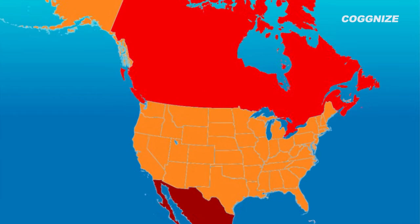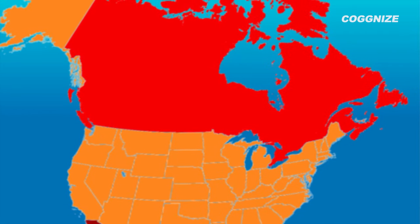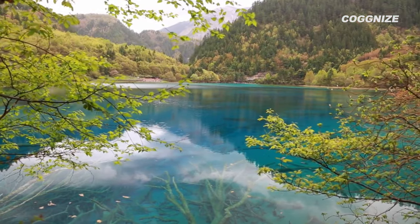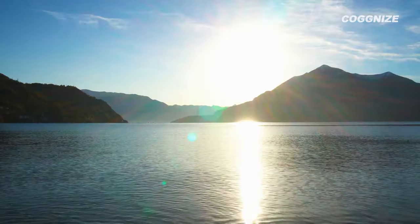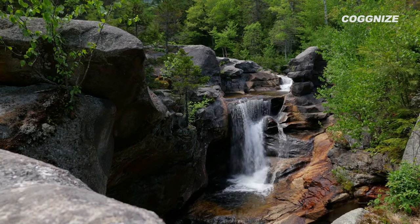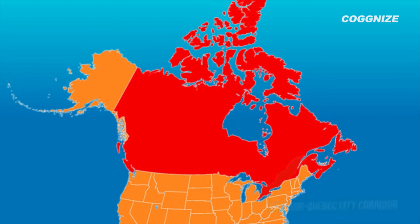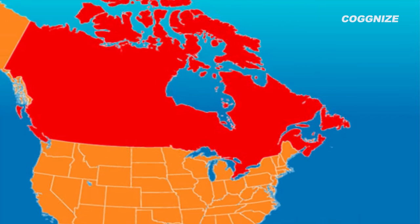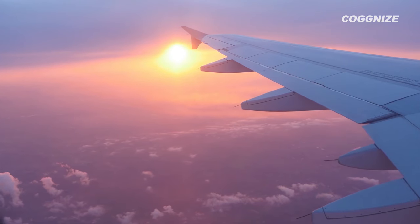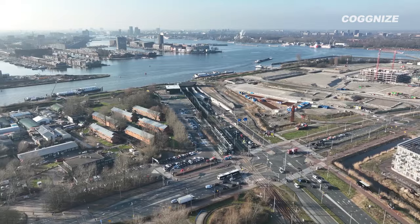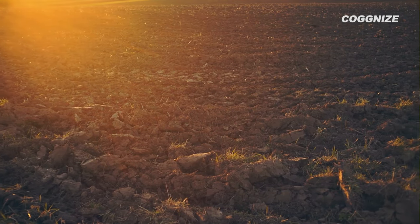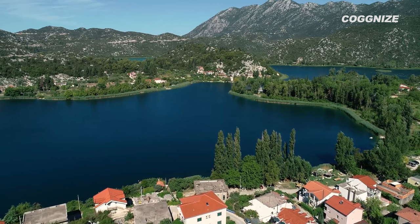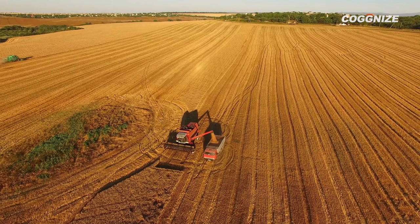As you travel south towards the US border, the climate gradually becomes milder and more favourable for both human habitation and agriculture. This favourable climate is largely attributed to the presence of the Great Lakes, which act as massive heat sinks, absorbing and releasing heat slowly and moderating temperature swings. The moderating influence of the Great Lakes is particularly evident in the Windsor-Quebec City Corridor, stretching along the US-Canada border from Windsor, Ontario to Quebec City. This corridor attracts people due to its fertile soil, abundance of fresh water, and well-developed transportation networks, with rich soil ideal for corn, soybeans and wheat.